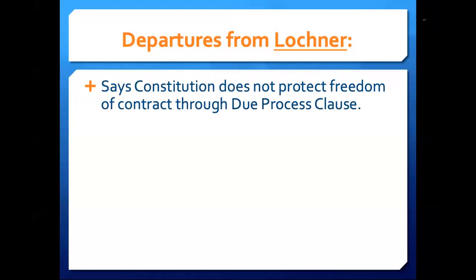Instead, the court comes along and says: freedom of contract — the Constitution does not speak of this freedom of contract that you are talking about. Or to the extent it is a constitutional right, it's certainly not an absolute liberty. So we see the Supreme Court repudiate this idea that the Constitution's Due Process Clause protects the freedom to contract.